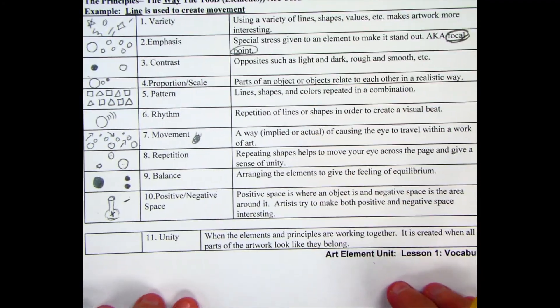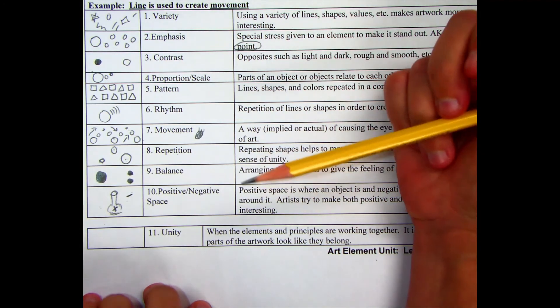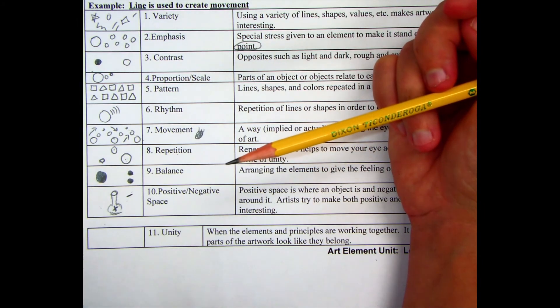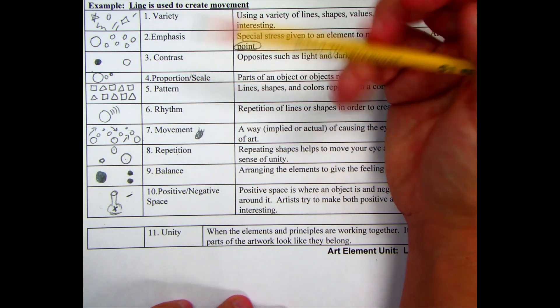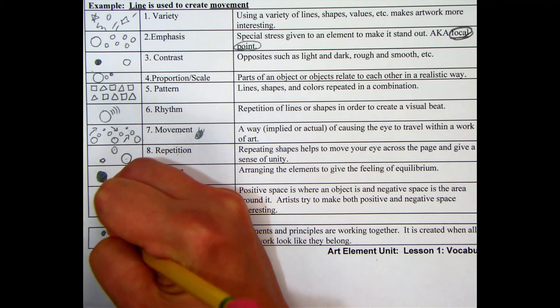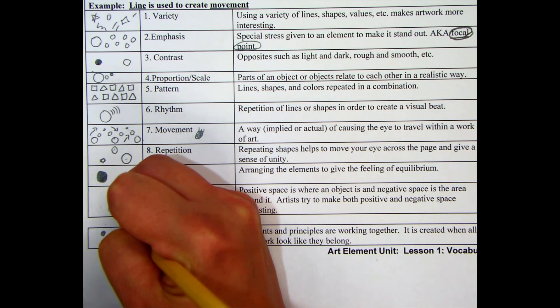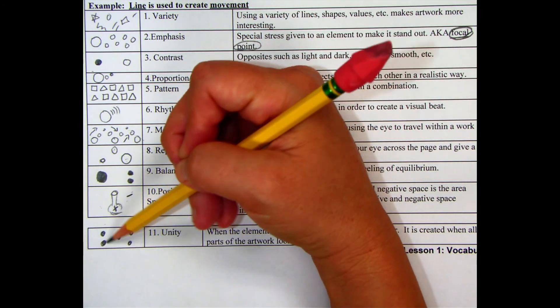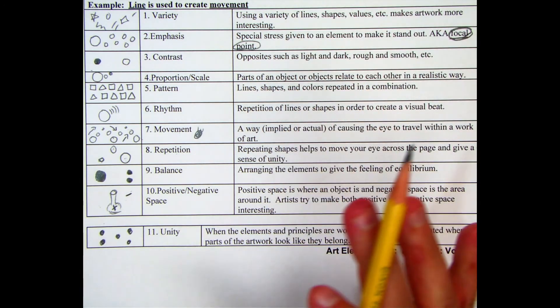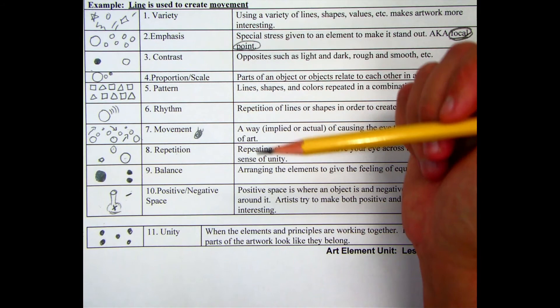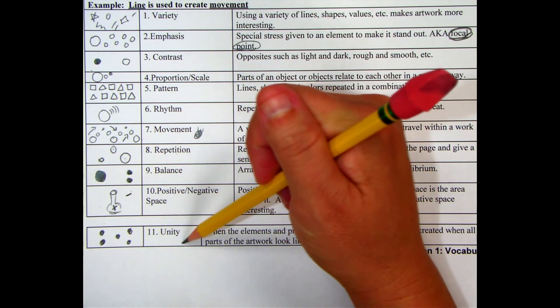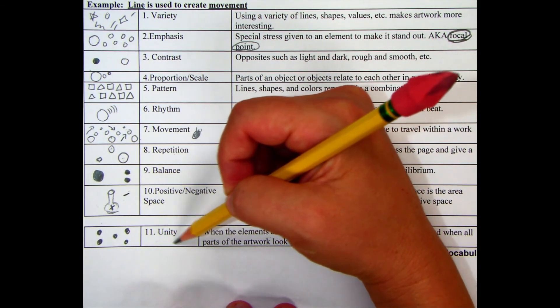If they are all working together, you have good positive and negative space, it looks balanced, it has good contrast. When they all work together and nothing looks funny, that's when you have this sense of unity. So we can just try to draw a quick unified piece where nothing is standing out. It all goes together. It's not unbalanced. It's not out of proportion. Everything looks right. And you know that when you look at an artwork and you say, that looks good. There's nothing I would change. And that's what we hope to gain as artists. Our goal is to create unity.